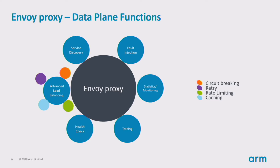By default, circuit breaking is turned off to allow packets to pass through. But once the fail count reaches a threshold, circuit breaking will start to take effect and packets will be blocked. This allows more elegant troubleshooting and timely response before the problem is amplified.